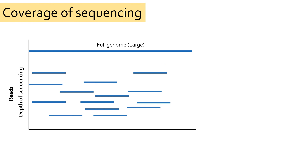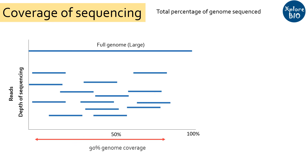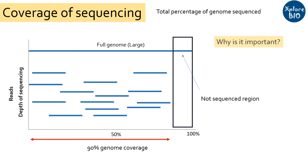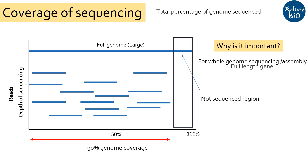Genome coverage, or gene coverage, on the other hand refers to the percentage of the total genome that is being sequenced. If the genome coverage is 90%, it means 90% of the genome has been sequenced at least one time. Genome coverage is an important consideration particularly when you perform whole genome sequencing or full-length gene discovery.